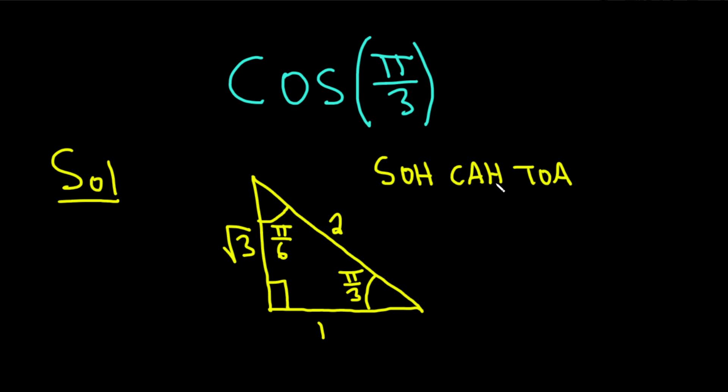So cosine is equal to adjacent over hypotenuse. So sine is opposite over hypotenuse, cosine is adjacent over hypotenuse, tangent is opposite over adjacent.